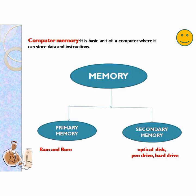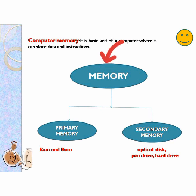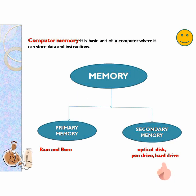Next we'll discuss computer memory, which comes under memory unit. It is a basic unit of a computer where it can store data and instructions. Memory is of two types: number one, primary memory, and number two, secondary memory.